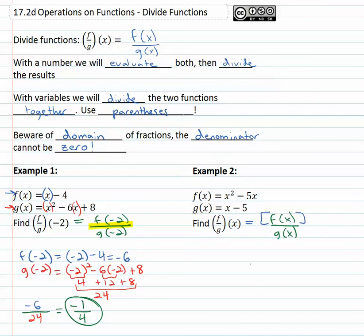Well, f of x is x squared minus 5x and we're going to put that over whatever g of x is. Well, g of x is x minus 5, and we now have a fraction that we can simplify and reduce.